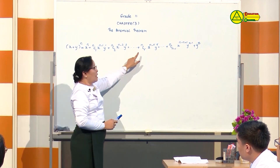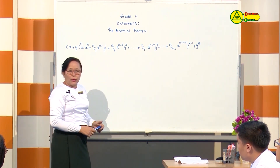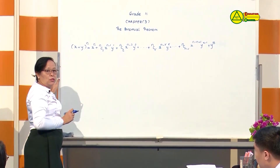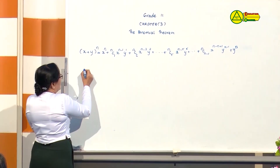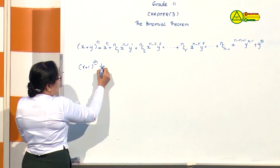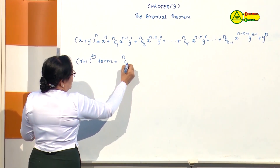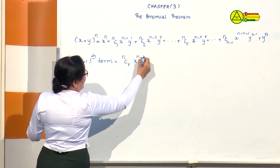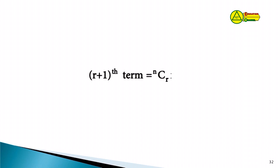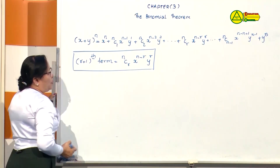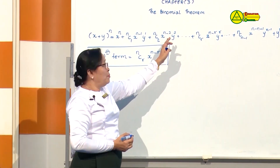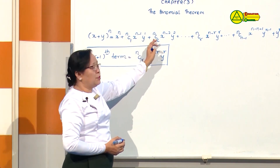Here, this is the R plus 1 term. In the R plus 1 term, we need a different value of R. We can multiply this way. The R plus 1 term is equal to nCr times a to the power of n minus r times b to the power of r.